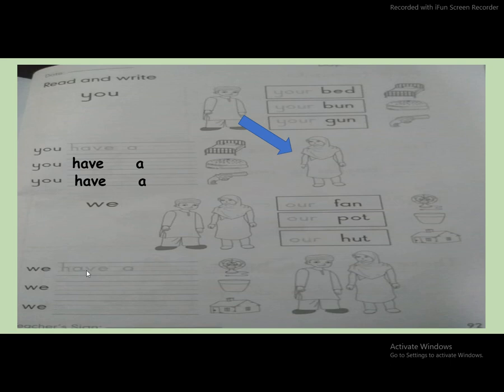Okay, students. Now, first of all, I will tell you. 'We have' means something that belongs to us. So, what are they saying? Now look here. We have a fan. We have a fan. Very good.